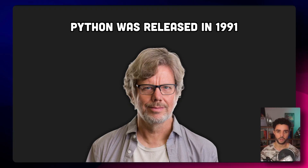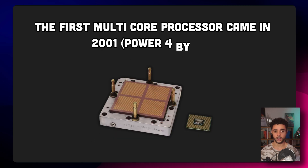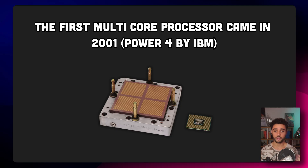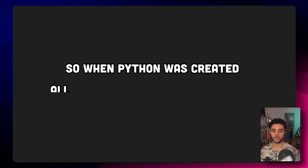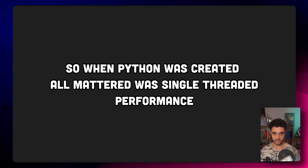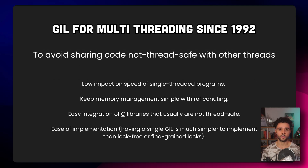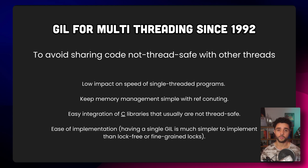Python was created in 1991 and at the time there were no multicore processors available. The first one came in 2001, so 10 years later, by IBM. So keep in mind that when Python was invented, all that mattered was single-threaded performance. So in 1992, when they introduced support for multithreading in Python, they used the GIL to avoid sharing code that is not thread-safe between multiple threads. The GIL works as a main lock that each thread needs to acquire to be able to execute instructions.